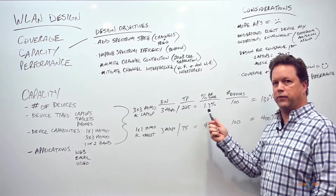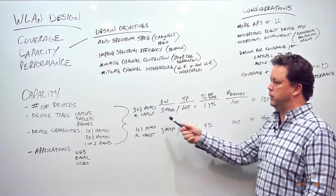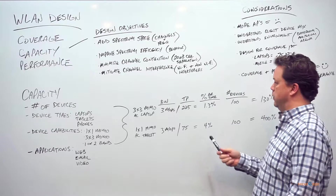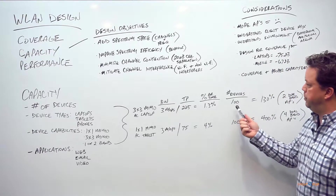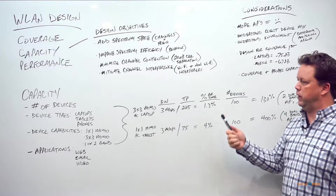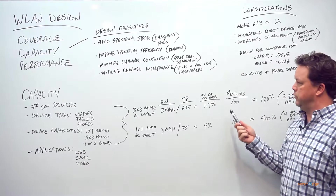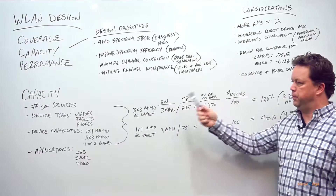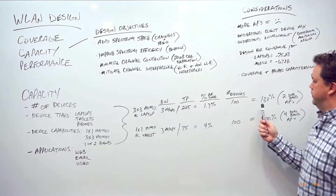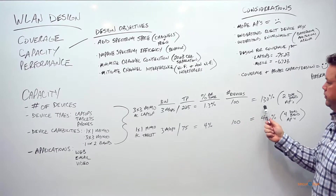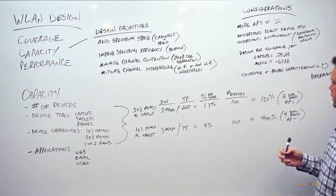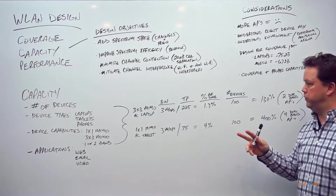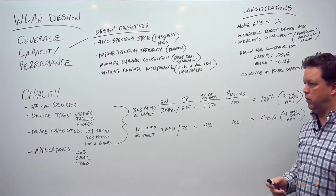Three megabits divided by 225 megabit throughput gives us 1.3% of airtime — meaning one single laptop is going to take up to 1.3% of the airtime on the wireless network. If we multiply that by 100 devices in an auditorium, 100 times 1.3% gives us 130%, telling us we're going to need at least two dual-band access points to address all those users.